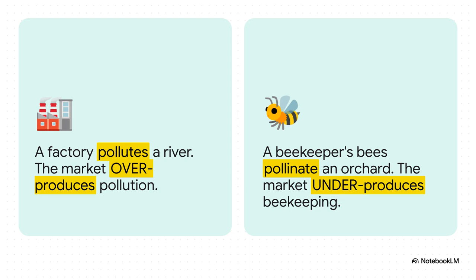On the flip side, you have positive externalities. Think of a beekeeper whose bees also pollinate the apple orchard next door — the orchard owner gets that benefit for free. Because the beekeeper isn't paid for that extra value, the market ends up with too few bees.